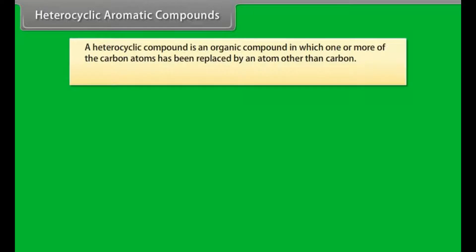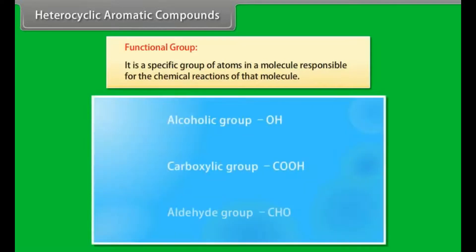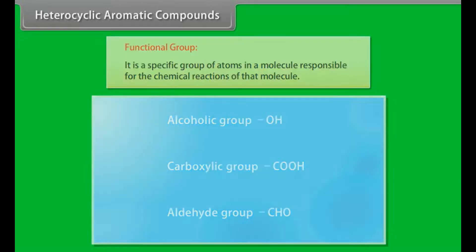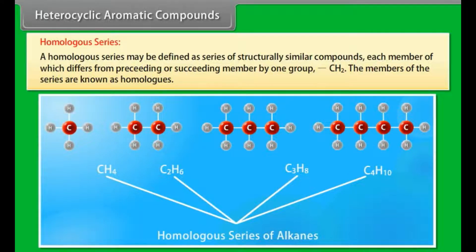A heterocyclic compound is an organic compound in which one or more of the carbon atoms have been replaced by an atom other than carbon. Typical heteroatoms are nitrogen, oxygen and sulfur. Functional group is a specific group of atoms in a molecule responsible for the chemical reactions of that molecule. A homologous series is a series of structurally similar compounds, each member of which differs from the preceding or succeeding member by one CH2 group. The members of the series are known as homologues.